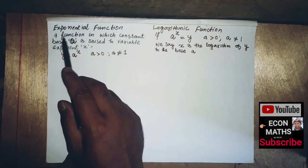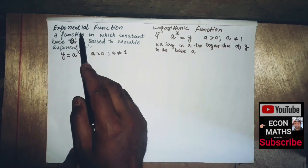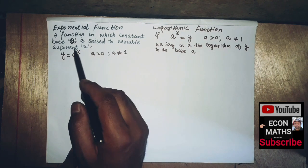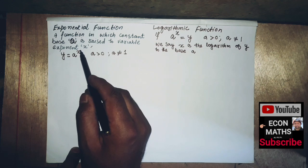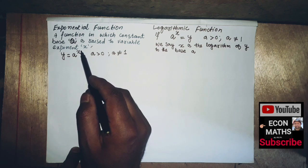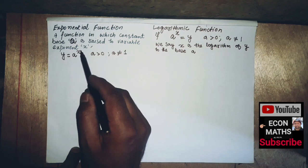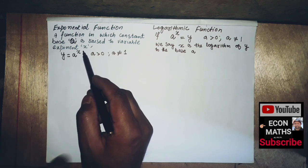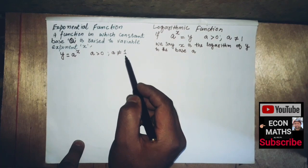A function in which a constant base a is raised to a variable exponent x is called an exponential function. The base is constant and the power is variable, unlike a power function where the base is variable and the power is constant. Here a must be greater than 0 and a should not be equal to 1. These are the constraints on the exponential function.